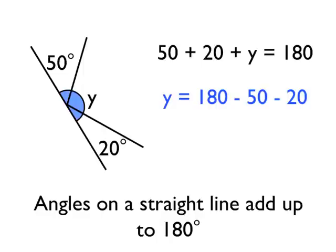Or another way of thinking of this would be to say if we start with our 180 degrees, we take away 50, we take away 20, what we'd be left with would be angle Y. So 180 take away 50, take away 20 is 110. So angle Y is 110 degrees.